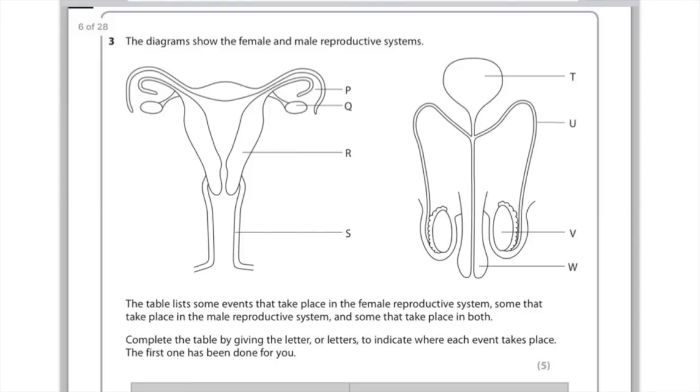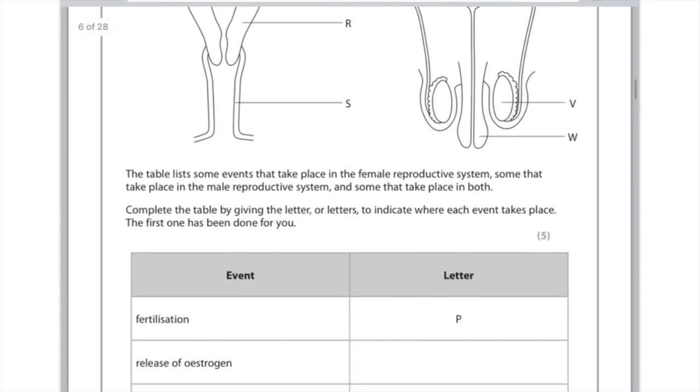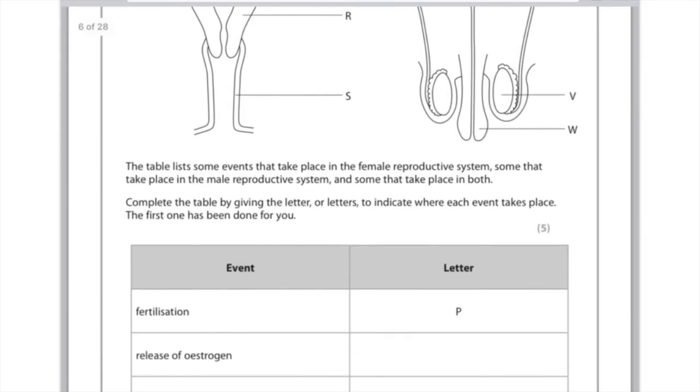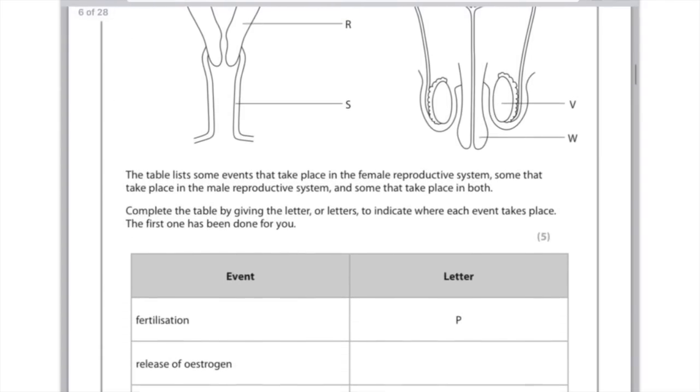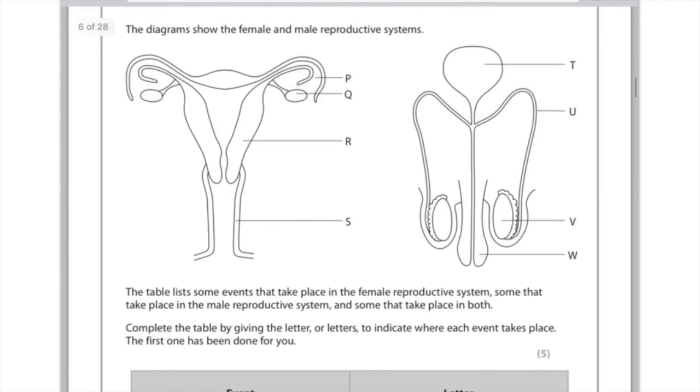The diagrams show the female and male reproductive systems. The table lists some events that take place in the female reproductive system, some that take place in the male reproductive system and some that take place in both. Complete the table by giving the letter or letters to indicate where each event takes place. The first one has been done for you. Right, fertilisation occurs in P which is the oviduct, yes I agree with that. Release of oestrogen, well that's obviously to do with females and it comes from the ovary so you're going to have to put the letter Q there because that's identifying the ovaries.